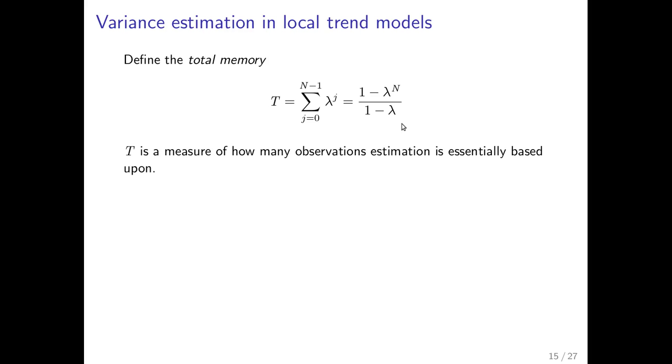So the efficient effective number of observations when lambda is 0.9 is 10. So the total memory is 10 observations. No matter how big n becomes effectively you are not using any more than 10.